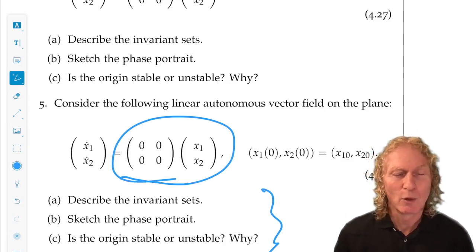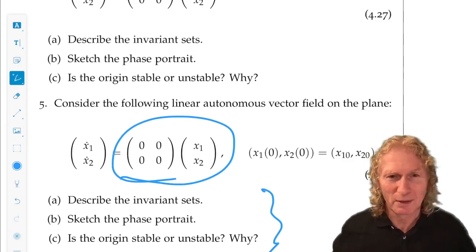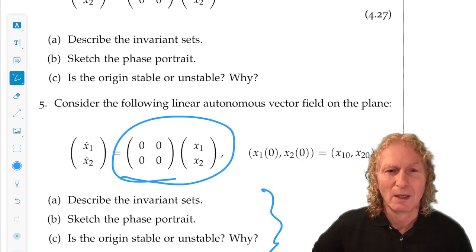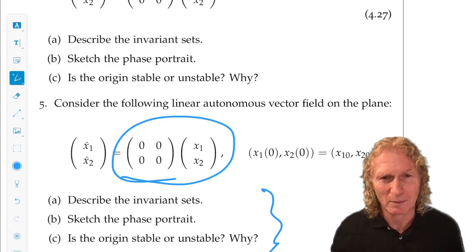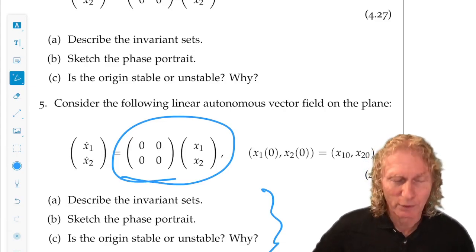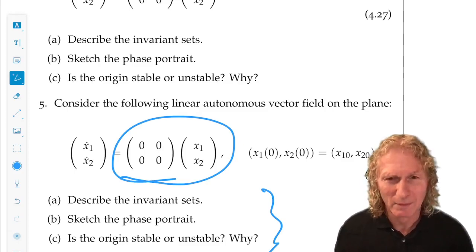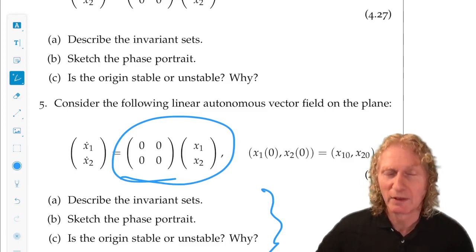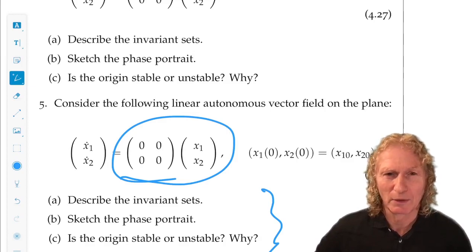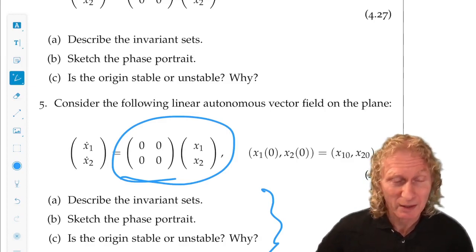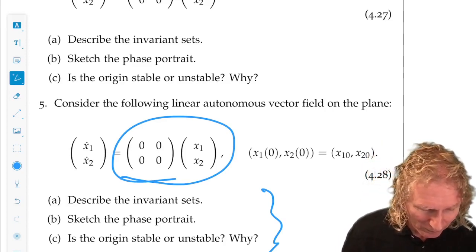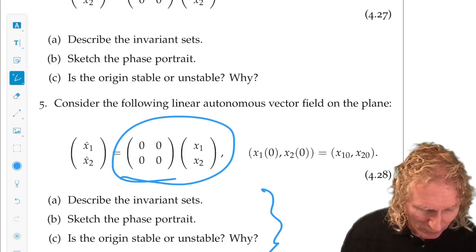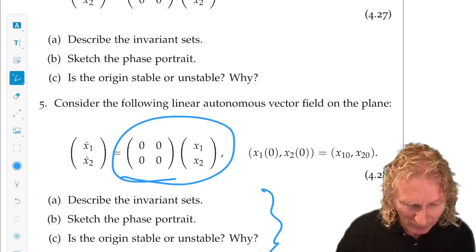Every point - no point moves. So you can construct invariant sets like crazy. Every point is an invariant set. Take any line you want, any circle, any squiggly shape - it's an invariant set. Sketch the phase portrait - well, nothing moves. Is the origin stable or unstable? It's stable. Lyapunov stable. If you start near it, you stay near it. Nothing moves. That just made you think about these things, hopefully.